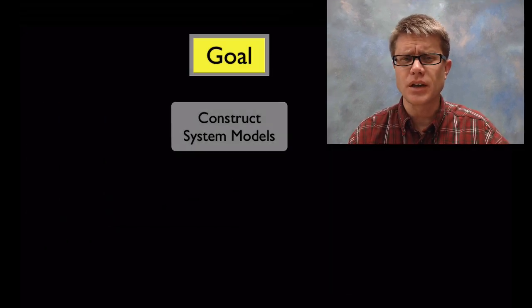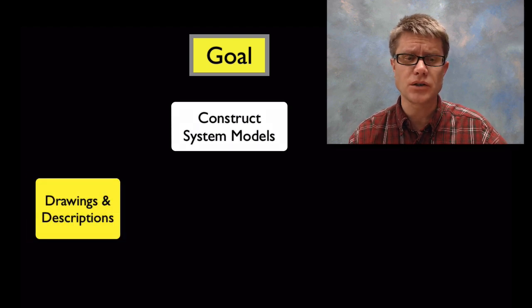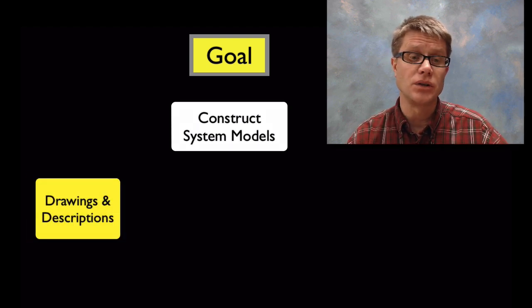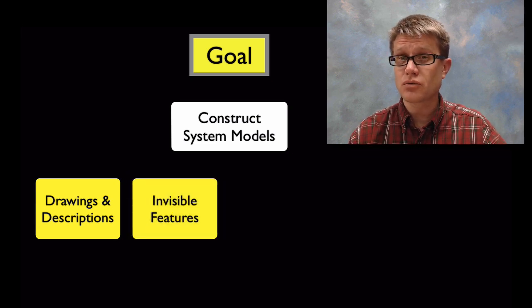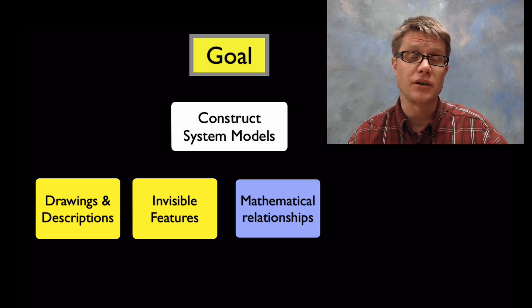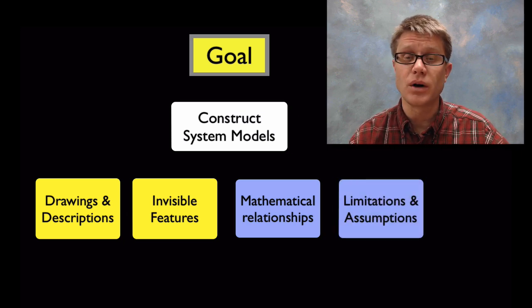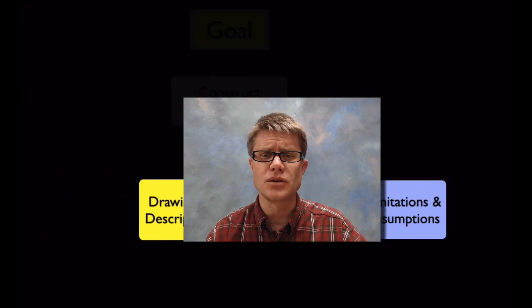And so what's the goal in a science classroom? We want our students to construct system models. So how do we start? We begin in the lower classes by doing drawing and then descriptions. We want to then include invisible structures in those drawing and diagrams. We then want to include mathematical relationships. And finally we want to talk about the limitations and the assumptions found within those system models.